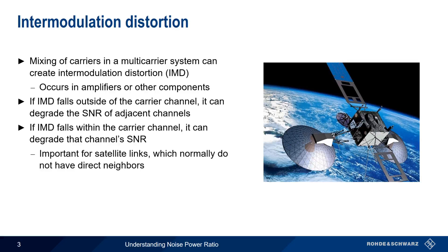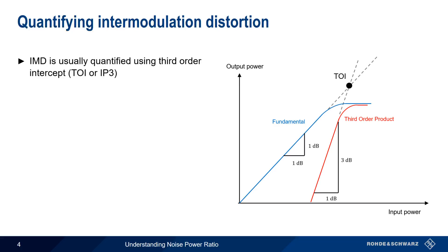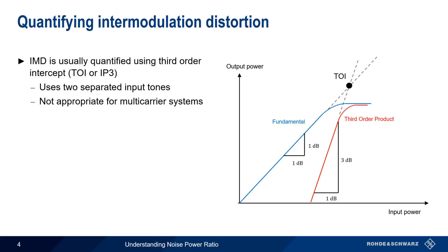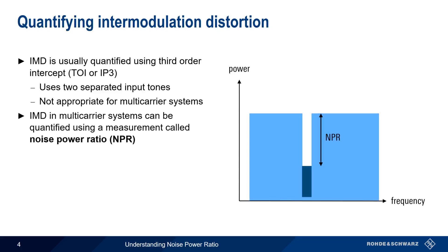This is a common concern in satellite systems. Since these links don't normally have direct neighbors, they could be affected by IMD falling outside of the channel. So how do we quantify this intermodulation distortion? The classic method is a third-order intercept measurement, which uses two separated input tones and is the standard way of quantifying device linearity. However, traditional third-order intercept measurements aren't really applicable for multi-carrier systems with large numbers of contiguous carriers. Instead, IMD in multi-carrier systems, like many satellite applications, is normally quantified using a measurement called Noise Power Ratio, or NPR.